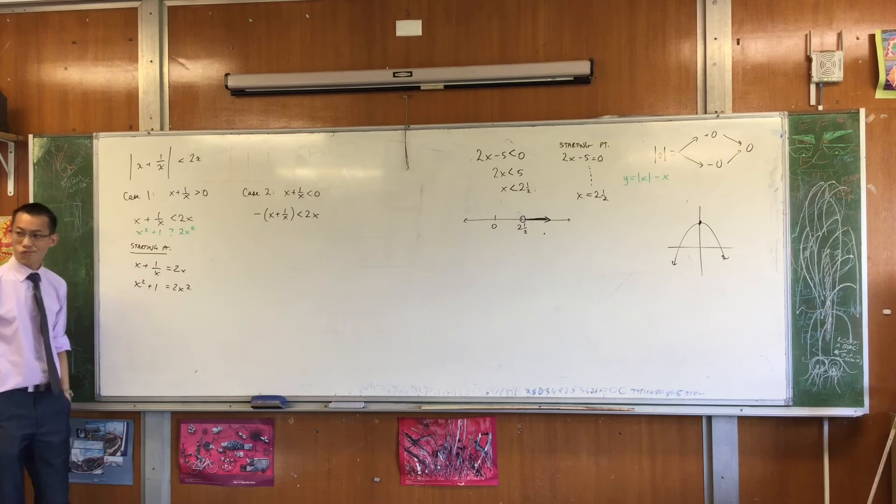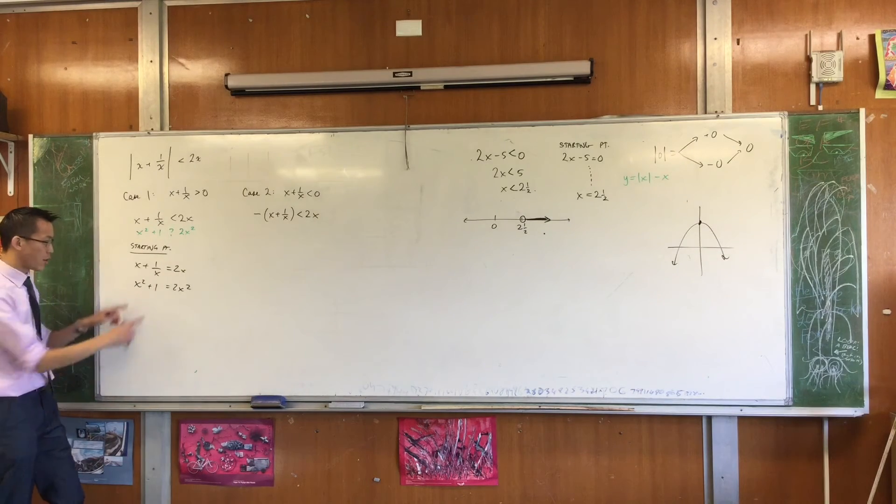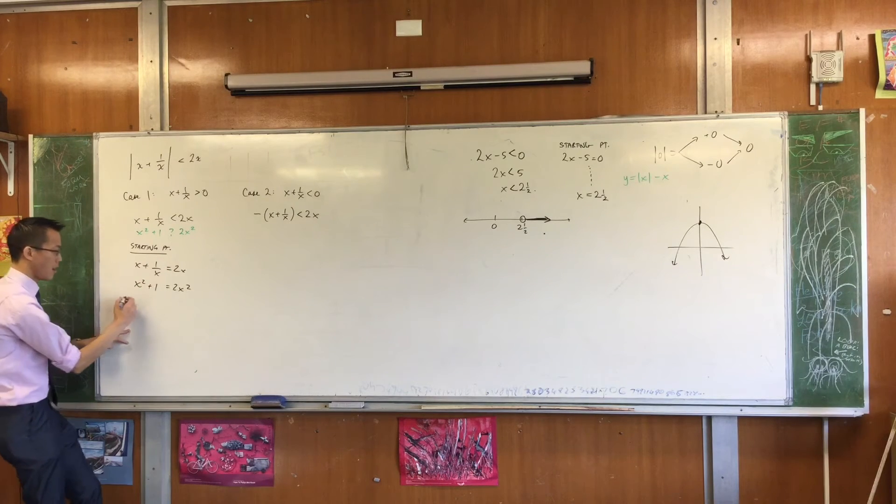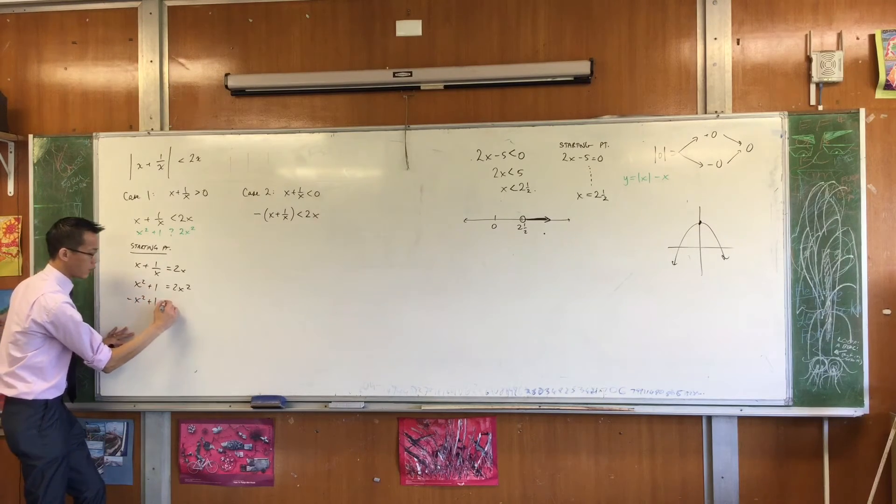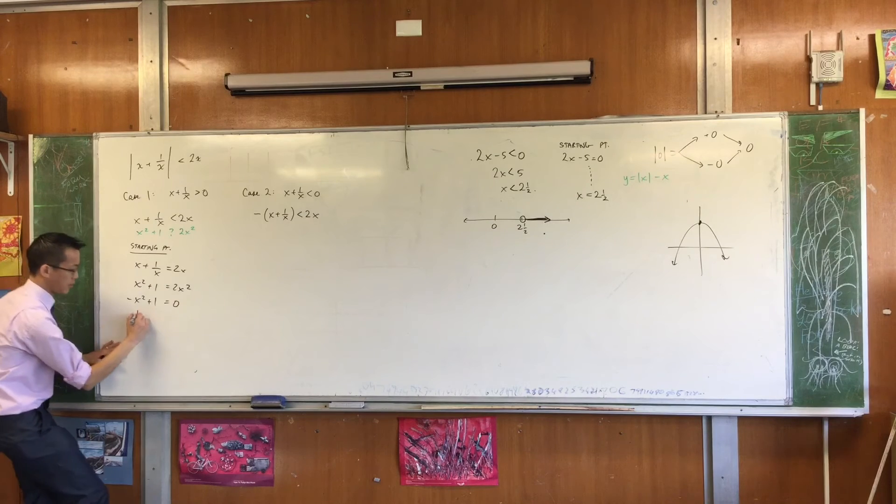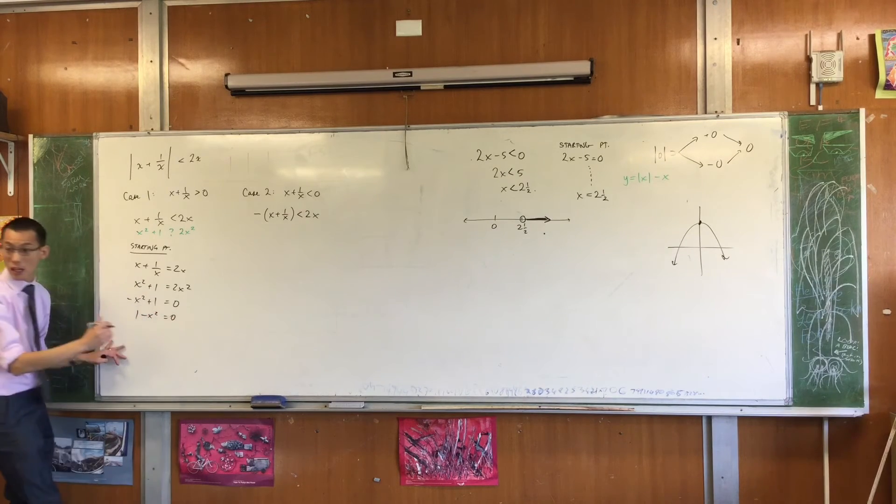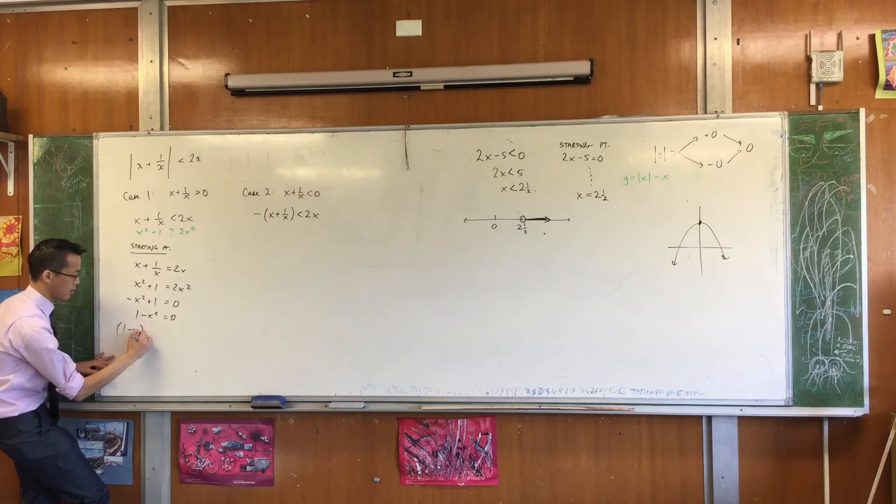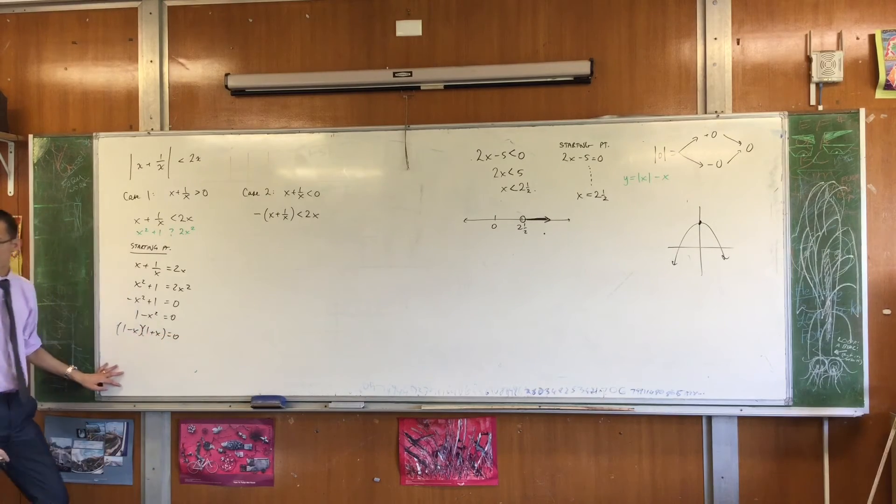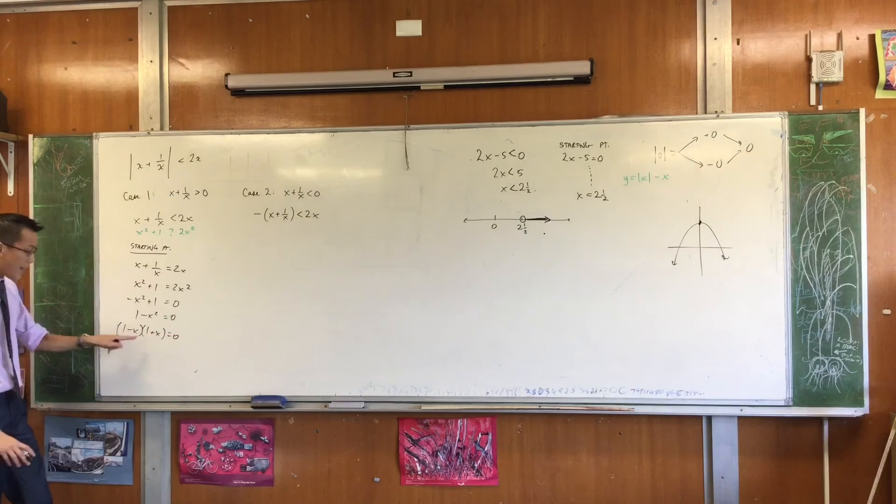Should it be negative x squared plus 1? Yeah, so if I subtract 2x squared from both sides, that'll be negative x squared plus 1 equals 0. And of course that's a bit of a weird way to write that, so we'll just fix that up. So that looks like this. Is that okay? Is the opposite intercepts? Yes.